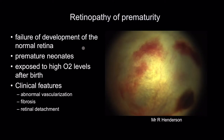ROP is a failure of development of the normal retina in premature neonates, so always ask a birth history. They've been exposed to high oxygen levels after birth, and they get abnormal neovascularization, fibrosis, and retinal detachment.